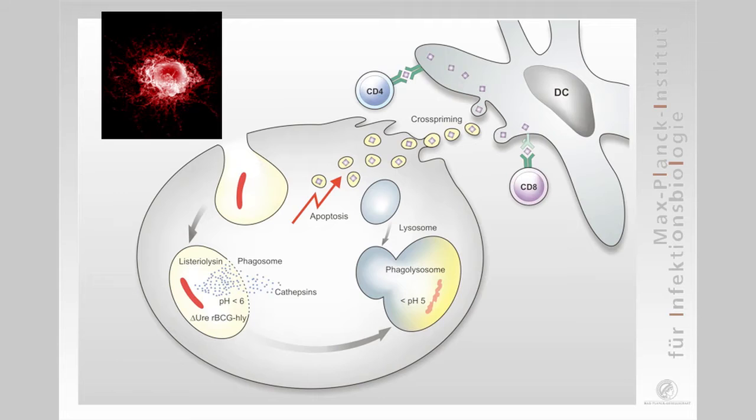We integrated the listeriolysin gene into the chromosome of BCG — not as a plasmid — but BCG expressing it was weak at perforating the membrane because listeriolysin has a very distinct pH optimum of about 5.2, and BCG neutralizes the phagosomal compartment. We deleted urease, which catalyzes ammonia production, so now we can generate an acidic pH, and BCG expressing listeriolysin can perforate the membrane, allowing stimulation of both CD4 and CD8 T cells.